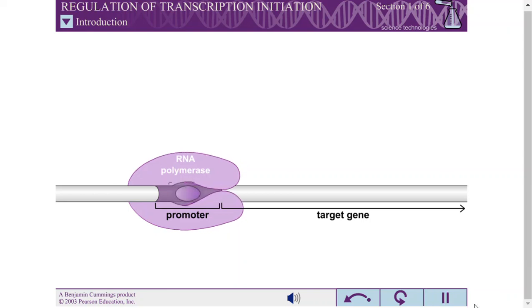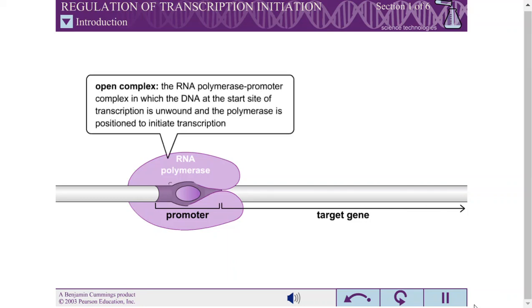RNA polymerase then causes the DNA at the start site of transcription to unwind. The complex in which the DNA is unwound is called an open complex.